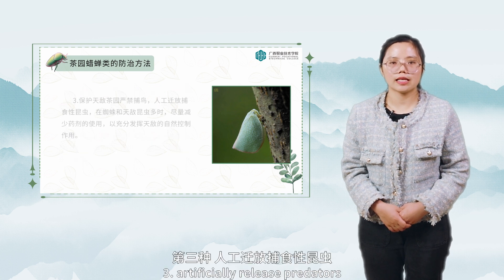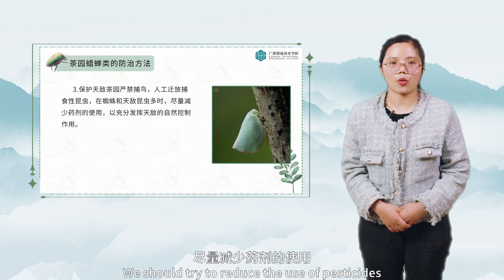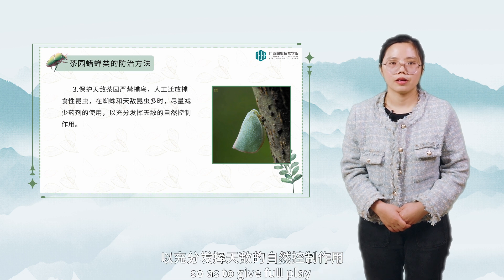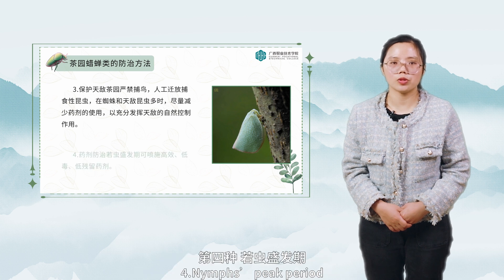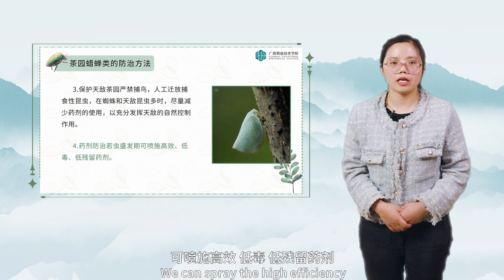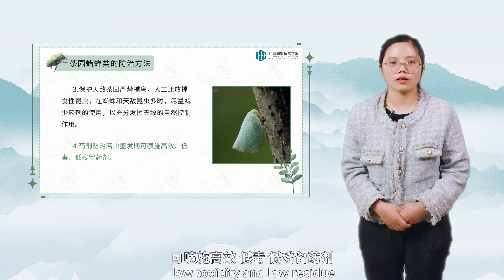Artificially release predators. When there are many spiders and natural enemy insects, we should try to reduce the use of pesticides so as to give full play to the natural control role of natural enemies. During the nymph peak period, we can spray high-efficiency, low-toxicity, and low-residue pesticides.